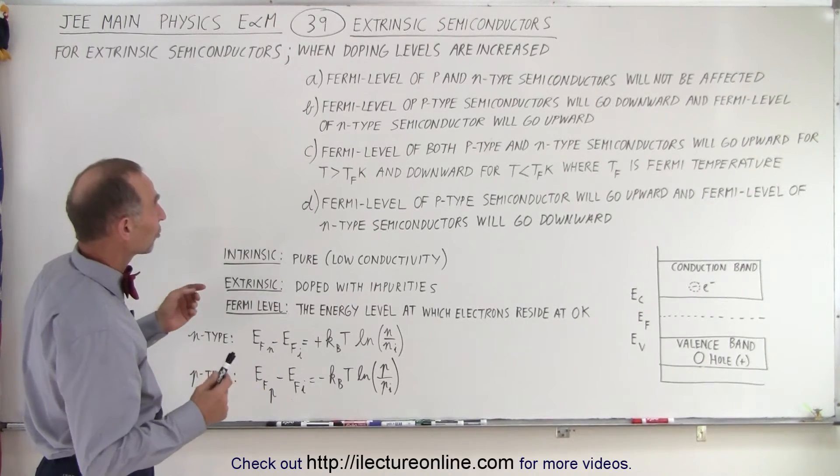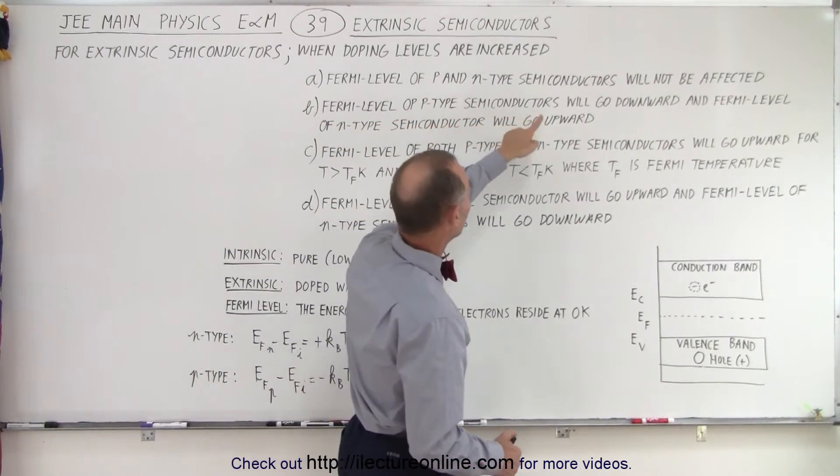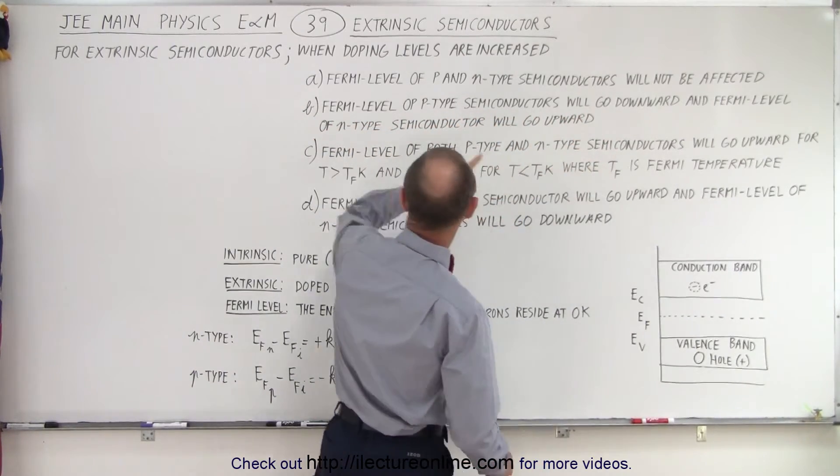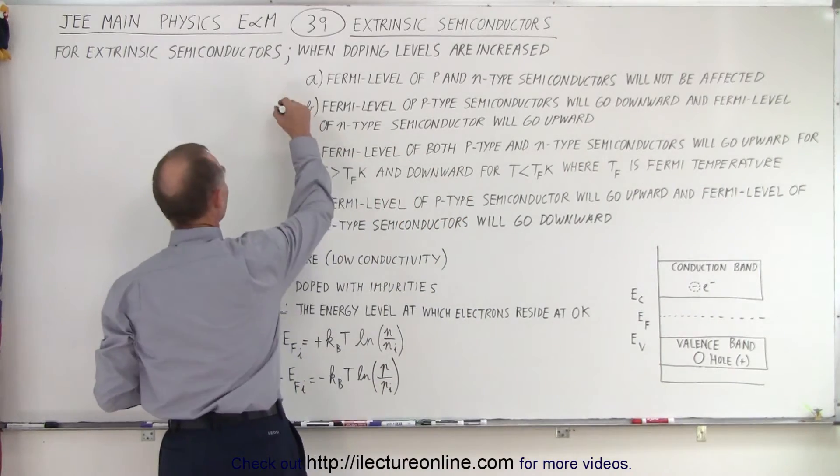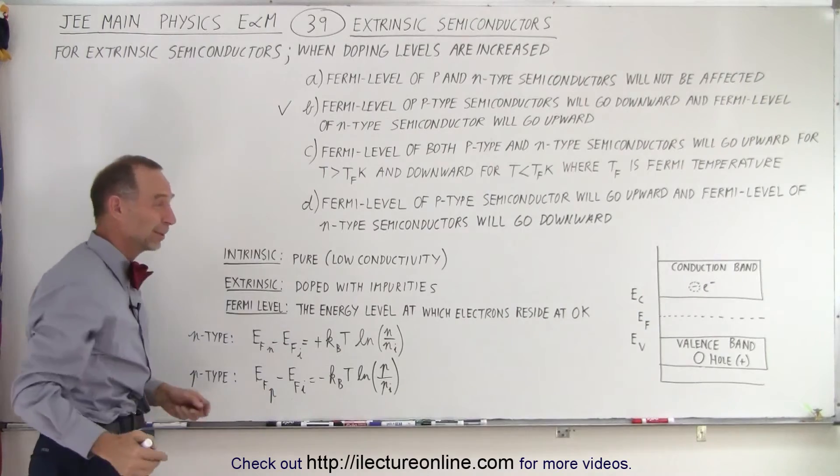And which of the four answers tells us that? It says Fermi level of p-type semiconductors will go downward, and Fermi level of n-type semiconductors will go upward. And therefore, based upon these two equations, we can see that answer B is the correct one.